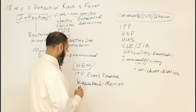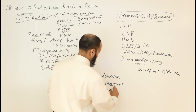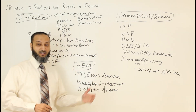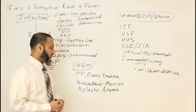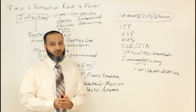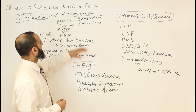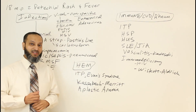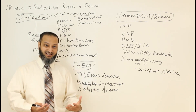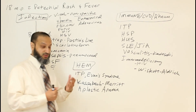Another entity related to recent viral infection is aplastic anemia — a viral infection causing bone marrow suppression of red cells, platelets, and white cells. When you have a petechial rash you think about low platelets, but it's possible other cell lines are also involved. Parvovirus B19 especially is associated with aplastic crisis — particularly in sickle cell patients — and other viruses can also cause aplastic anemia.